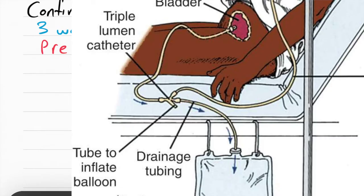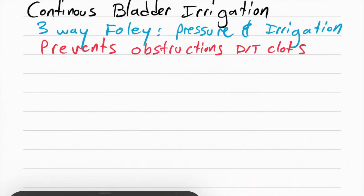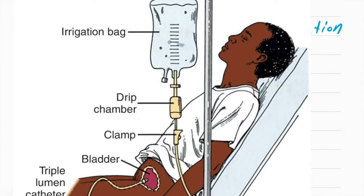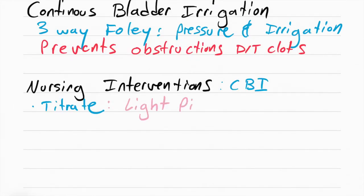Here's a picture of how that looks. We see how the foley has three lumens: one for the balloon to be inflated, one for the irrigation bag, and one for the urine to be drained. Our job as nurses is to titrate this continuous bladder irrigation. There's no set rate. We want to titrate this to the color light pink, so we want the irrigation coming out to be light pink in the drainage bag.